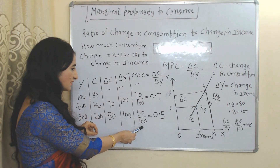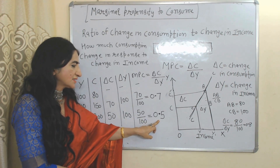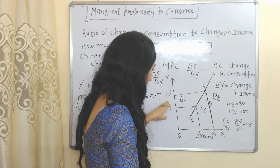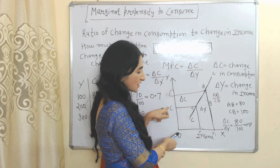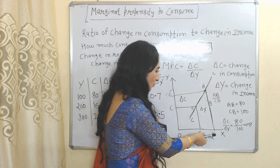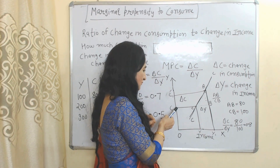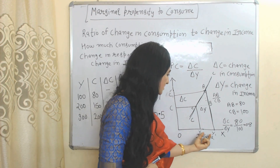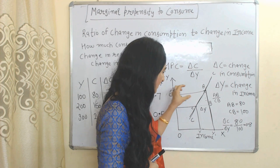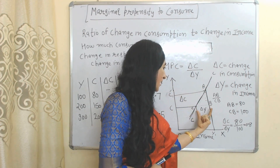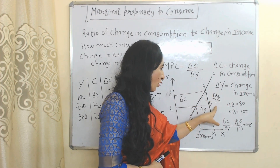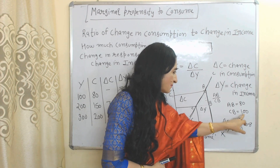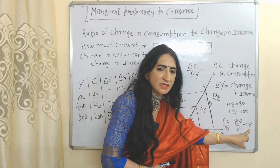In the next case, change in consumption is 50 and change in income is 100, so MPC is 0.5. On the graph, x-axis is income and y-axis is consumption. When income increases from Y to Y1, consumption increases from C to C1. AB represents the change in consumption and CB represents the change in income. AB over CB equals MPC. If AB is 80 and CB is 100, then MPC equals 0.8.